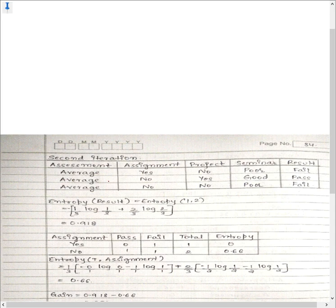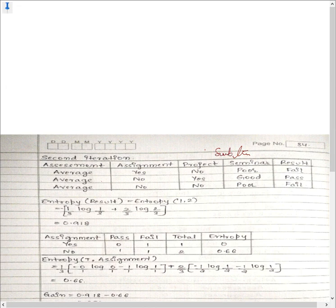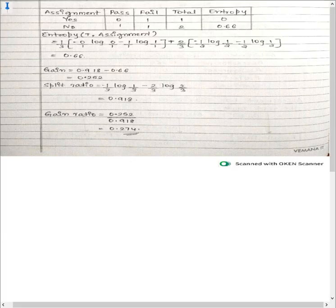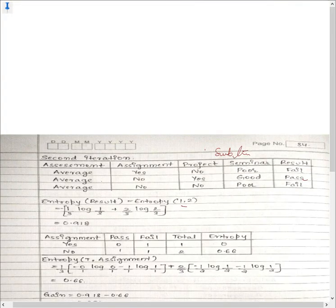For the second iteration, list all instances for the average category from the dataset. In the result attribute for average, we have 1 pass and 2 fails. This is our subtree. We compute the entropy for this subtree: entropy(1, 2) = minus(1/3)log(1/3) minus(2/3)log(2/3), which gives 0.918. This subtree entropy (0.918) is the base for the second iteration.